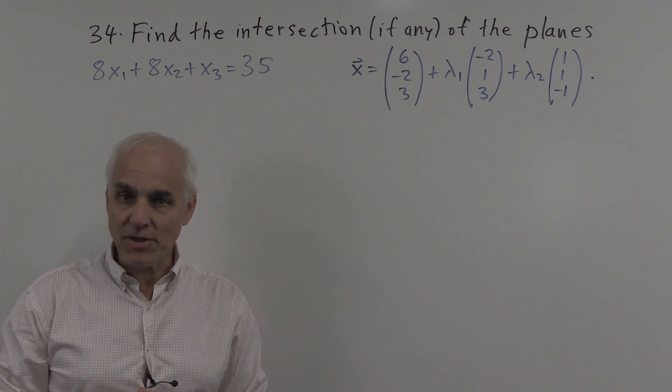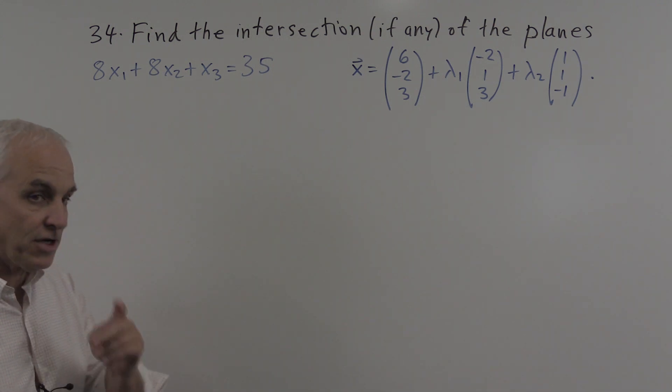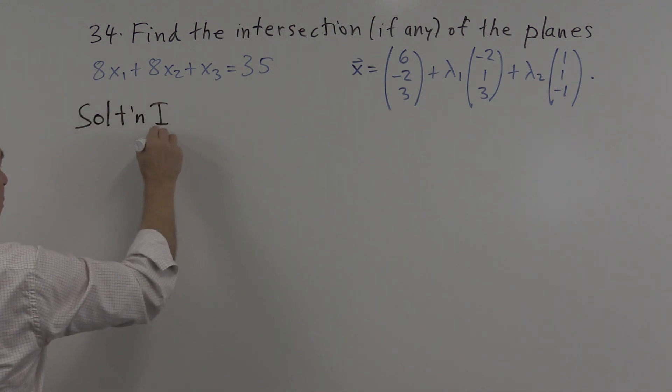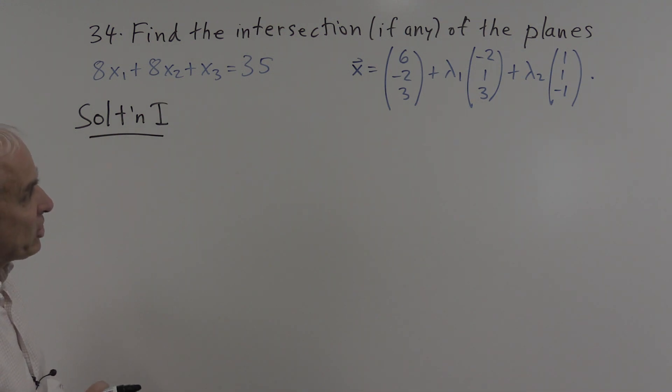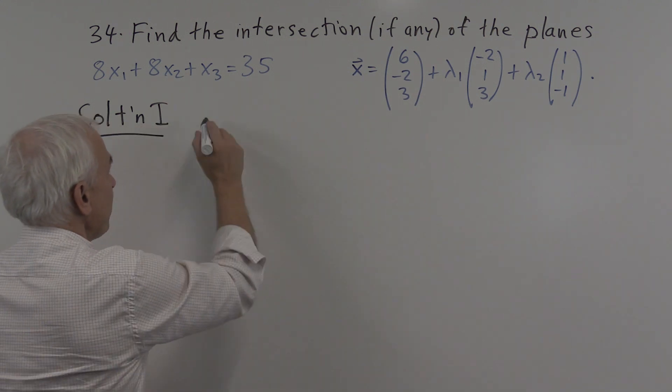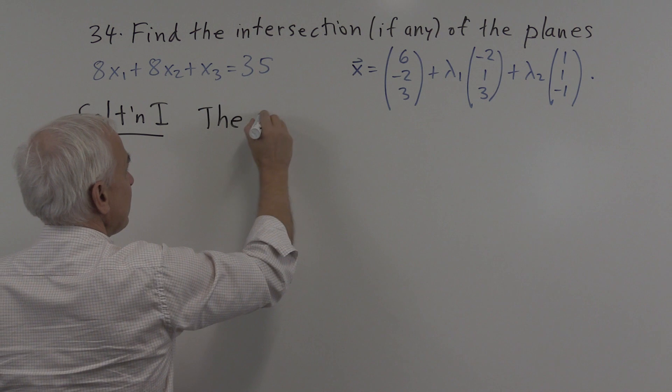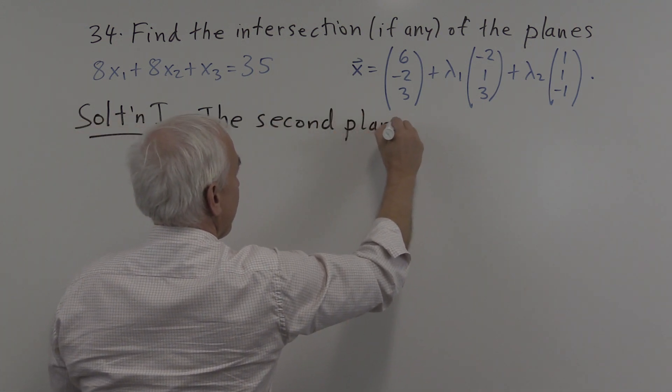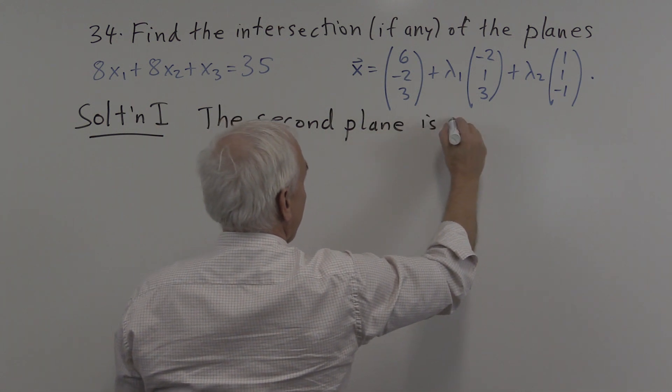There are several ways of doing this problem and I'm going to show you two different ways. Alright, so let's look at solution 1, which is probably the most direct. The observation is that from this form of the equation, we can read off that the second equation, or the second plane, is of the form...